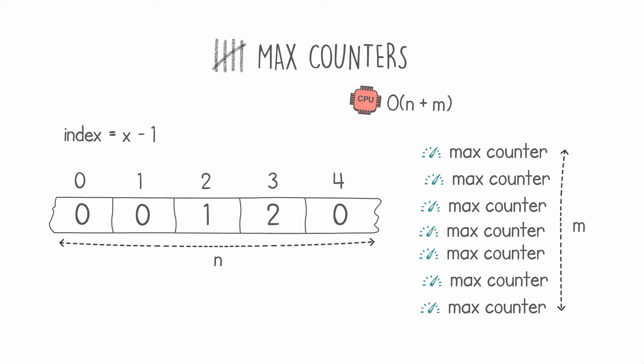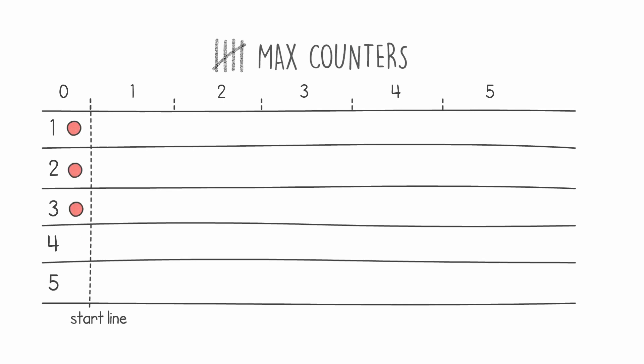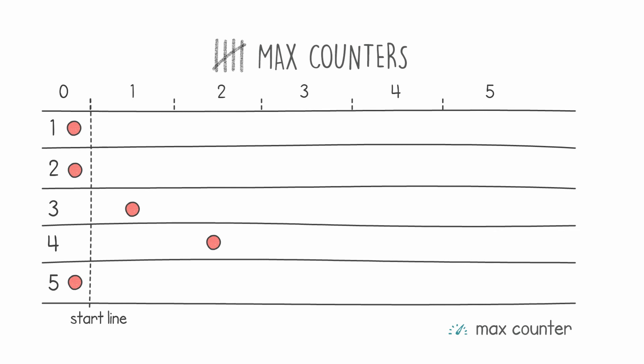As usual I'm going to make use of an analogy to help you solve this particular problem. In our analogy our counters are placed on a virtual racetrack. How far they get along the race depends on the value of that particular counter. We start processing our instructions and every time we get an increase for a counter we advance that counter one position. When we get a max counter operation we do something different — instead of setting all the counters to exactly the same position, we move the starting line to the front of our fastest runner, in effect restarting the race again.